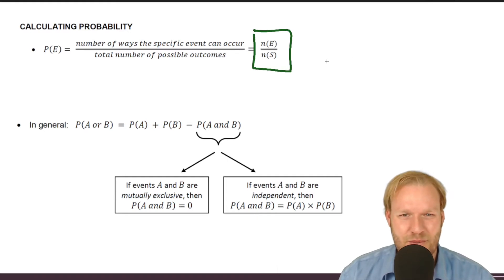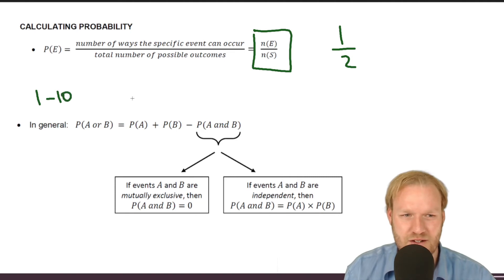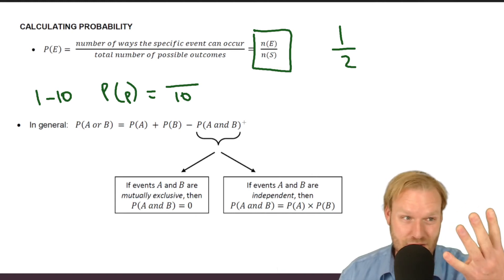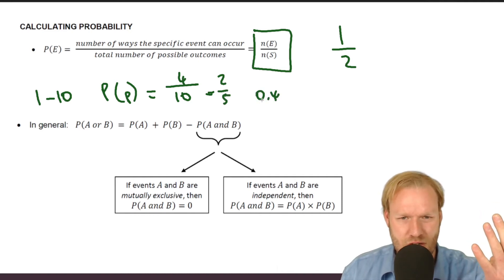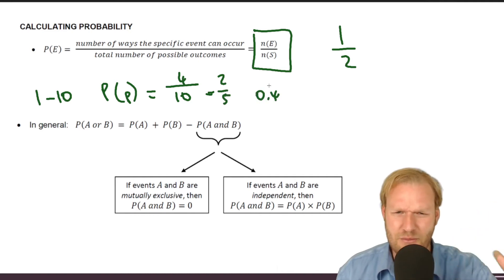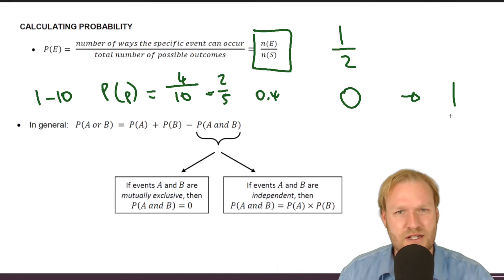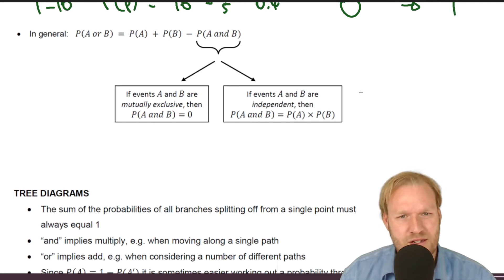For calculating probability, the formula might feel like overkill, but for heads and tails there's one head out of two possible outcomes. For numbers 1 to 10, the probability of picking a prime number: there are four primes (2, 3, 5, 7) out of ten, which is 4/10 or 0.4. Probability always ranges between 0 (never happens) and 1 (definitely happens).